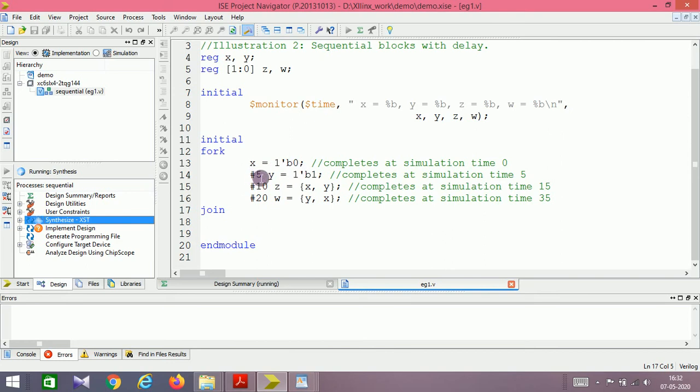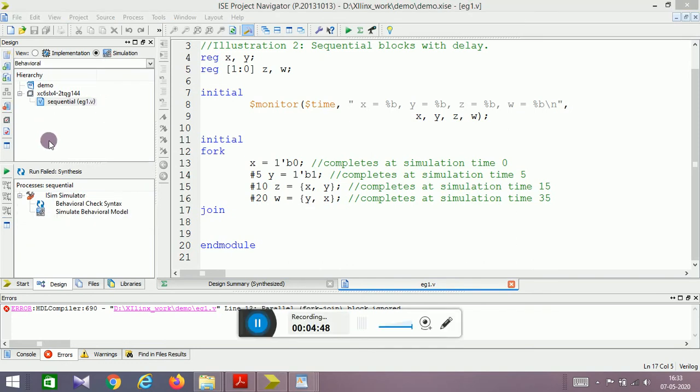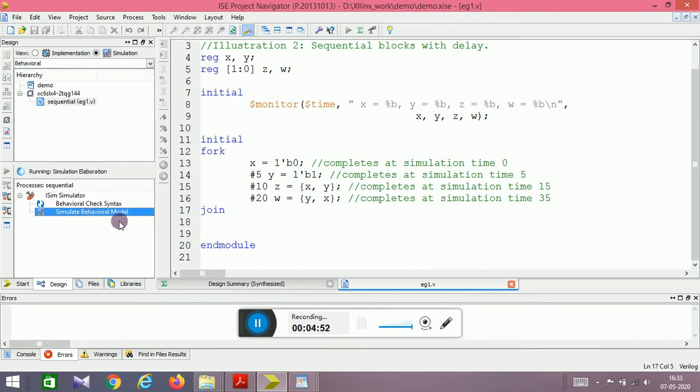When fork is encountered, everything inside it starts executing parallelly. At zero simulation time, X will be assigned with zero. After 5 time units, Y will be assigned with 1. After 10 time units, not 15, Z will be assigned with X comma Y. After 20 time units, W will be assigned with Y comma X. So let us simulate the same and check.